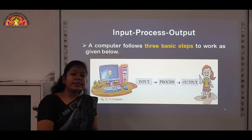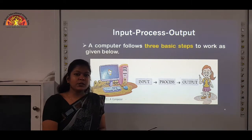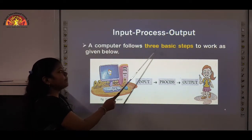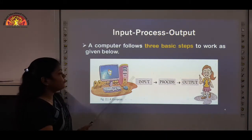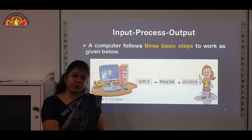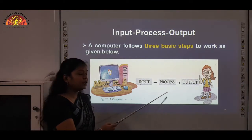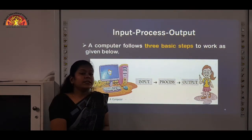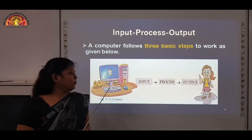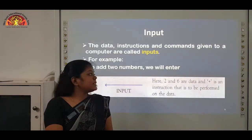Students, we have already discussed in our previous chapter that computers take input from the user. We are the user and we give inputs to the computer. A computer follows three basic steps to work: input, process, output. We give input to the computer using input devices like keyboard and mouse. Then the computer processes this input using the processing device. And the processing device gives the output using output devices on the monitor screen. Now we understand each of these steps one by one.